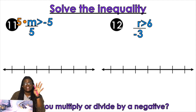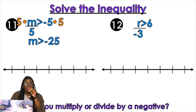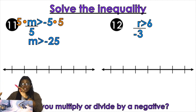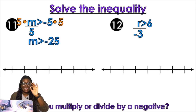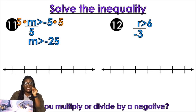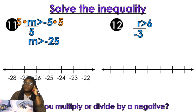We're going to multiply by 5 because that's how you cancel out division with multiplication. Do it on one side, got to do it on the other. M is greater than negative 25. Here's the common mistake — you multiply by a negative on just one side; you do not flip the symbol. You have to multiply or divide by a negative on both sides. If that 5 had been negative, then you would have flipped your symbol, but no. Open circle or closed circle? Open. Left or right? Right.